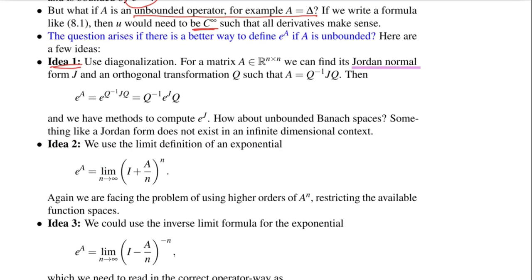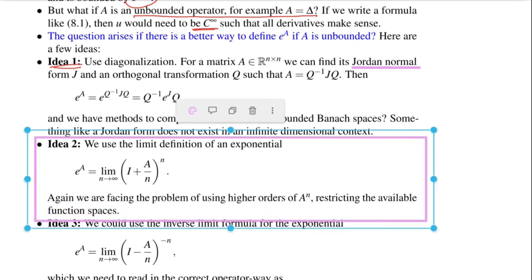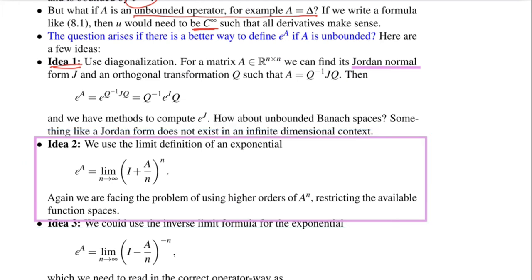Let's look at idea number two. We have a limit expression for the exponential. We could write e to the A as a limit, n goes to infinity, I plus A divided by n to the n. If A were a number, then I'm sure you have seen this limit definition for the exponential before. So why don't we put just an operator there?